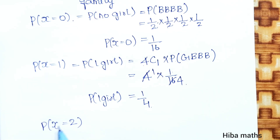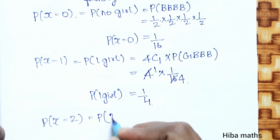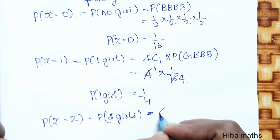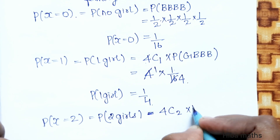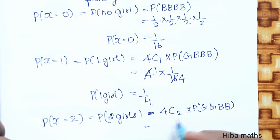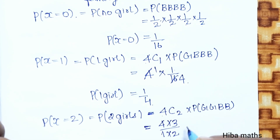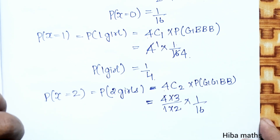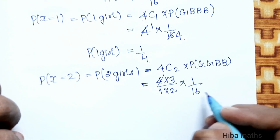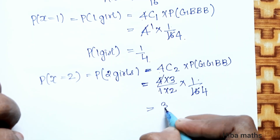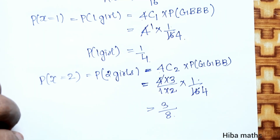Next, P(X = 2): 2 girls and 2 boys out of 4 children. Using 4C2 × (1/2)^2 × (1/2)^2. 4C2 = (4 × 3)/(1 × 2) = 6, and (1/2)^4 = 1/16. So 6 × (1/16) = 6/16 = 3/8. Therefore P(X = 2) = 3/8.